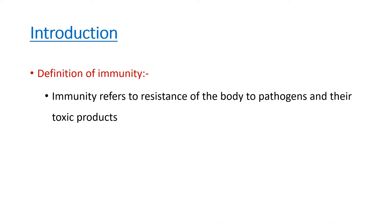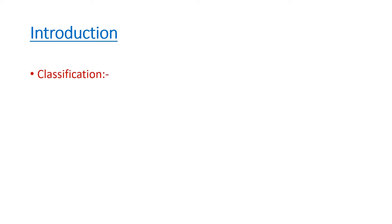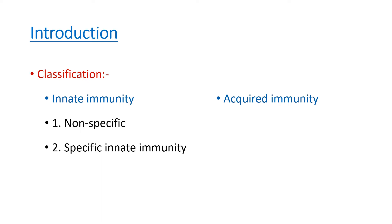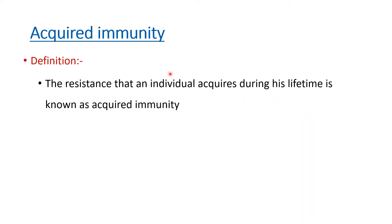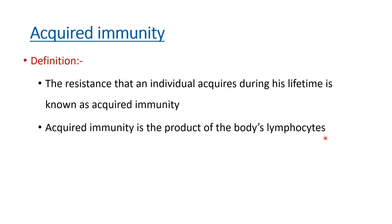In the introduction, we have to write about immunity. Immunity refers to the resistance of the body to pathogens and their toxic products. The classification includes innate immunity — which can be nonspecific or specific — and acquired immunity, which can be active or passive. Since humoral immunity is part of acquired immunity, we also write its definition: acquired immunity is the resistance that an individual acquires during his lifetime, and it is basically the function of the body's lymphocytes.